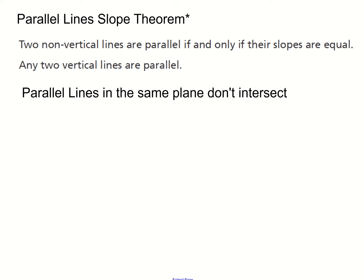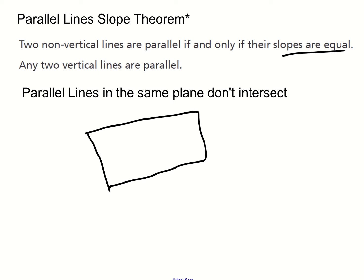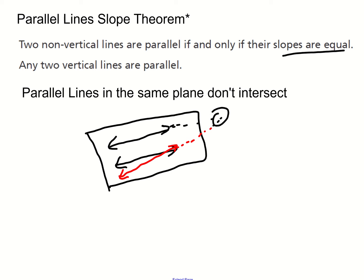Now we're looking at a theorem: any two non-vertical lines are parallel if and only if their slopes are equal. Parallel lines do not intersect if they're in the same plane. If you have two lines in a flat plane and they do not intersect, they're considered parallel. If lines are not parallel, then at some point if you extend them, they will eventually cross each other.